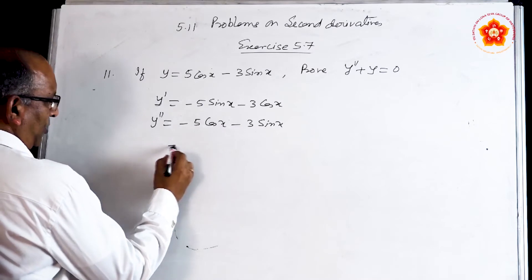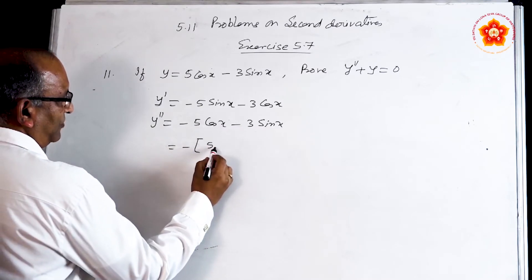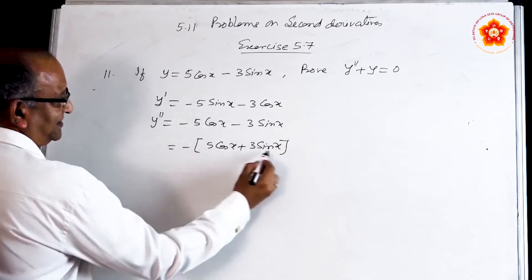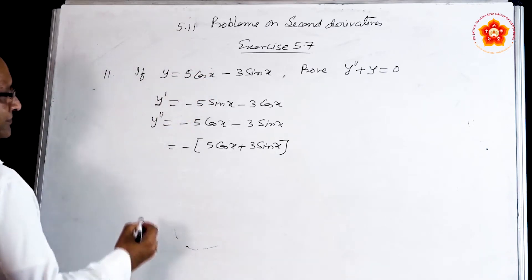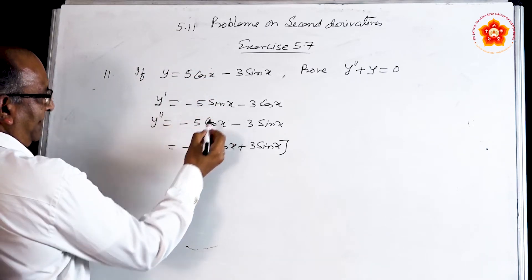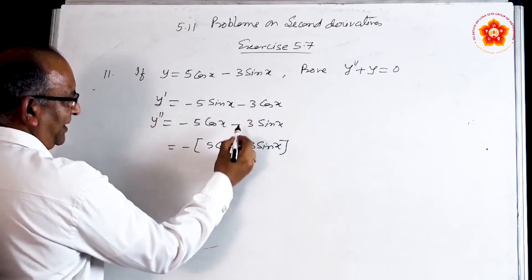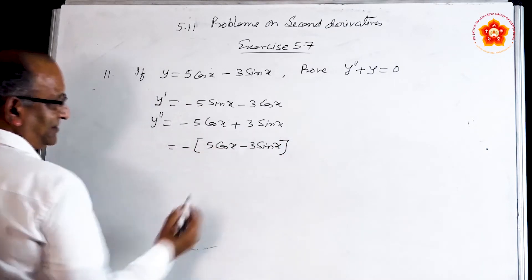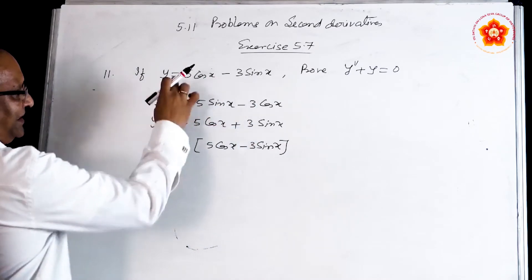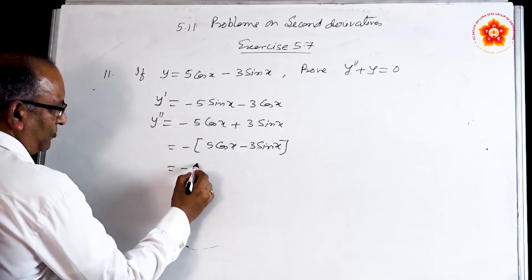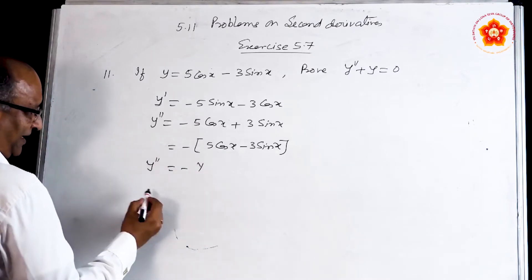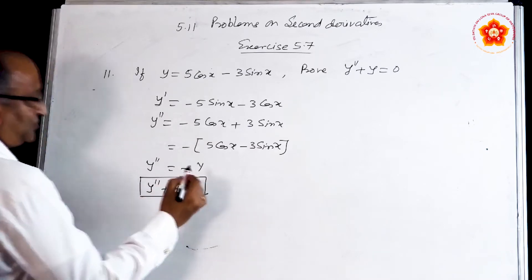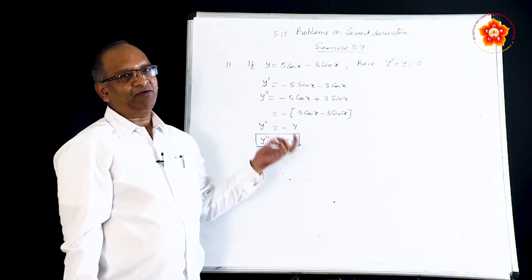Take −1 as common: what is left is 5cos x + 3sin x. But 5cos x + 3sin x is nothing but y, the original function. So y″ = −y, which gives y″ + y = 0. This is exactly what we were asked to prove.